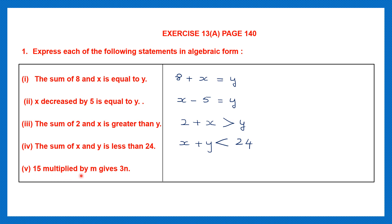Question 5: 15 multiplied by m gives 3n. So 15 multiplied by m — 'gives' means equal to — equals 3n. Now we can write this in another way: 15 into m we can write as 15m, which is the same as 15 into m, and this is equal to 3n.